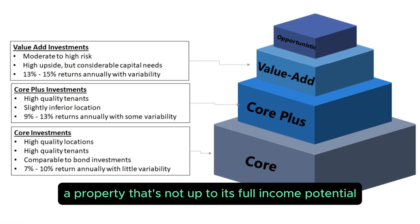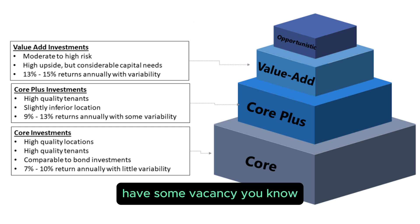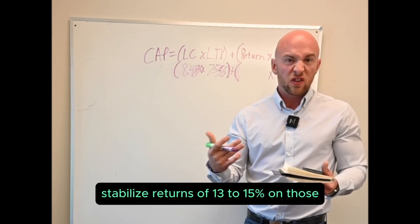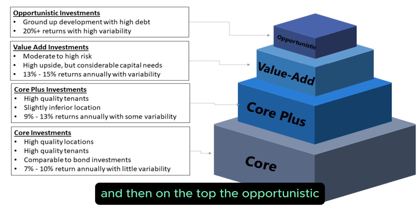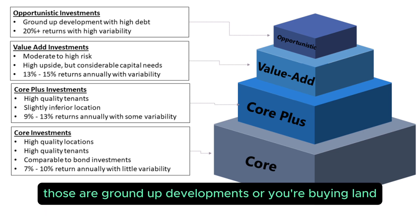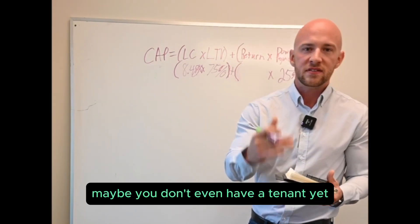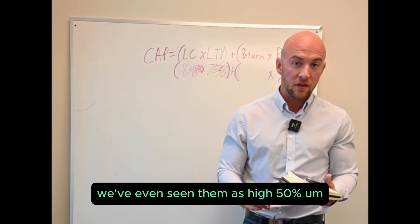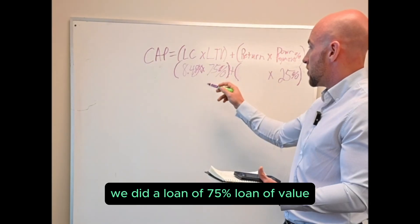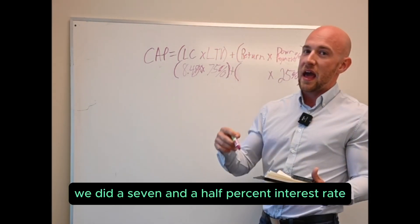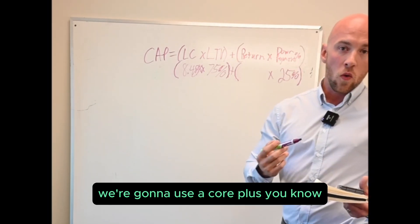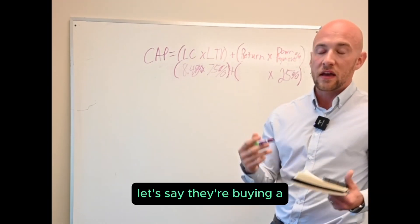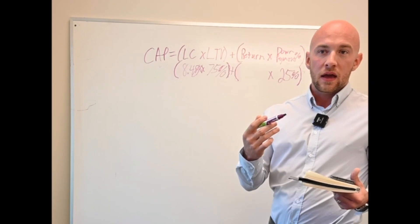Then as you keep on getting up, value add, meaning a property that's not up to its full income potential, has some vacancy, maybe you have to turn some rent over in multi-family. You're going to see stabilized returns of thirteen to fifteen percent on those. And then on the top, the opportunistic, those are ground-up developments or you're buying land, you're taking on full risk, maybe you don't even have a tenant yet, you're just going to build something on spec. Those all could be twenty percent plus, we've even seen them as high as fifty percent. For this particular situation, we did a loan of seventy five percent loan to value, we did a seven and a half percent interest rate. We're going to use a core plus. So maybe this investor is going to expect a return between nine and thirteen percent.